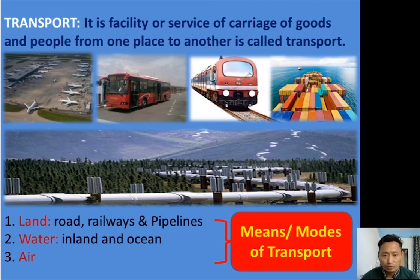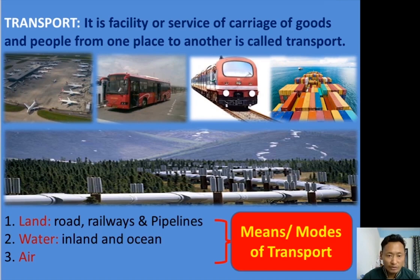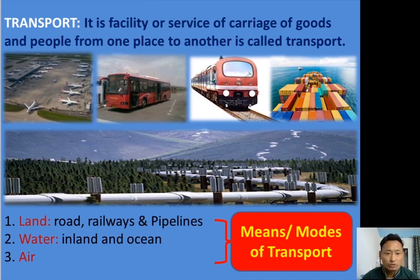Next we are going to learn about the means and modes of transport. The main theme of this chapter covers these one by one. First is land transport, which has three types: roadways, railways, and pipelines. Second is water transport, divided into inland waterways and ocean waterways. Lastly, we will learn about air transport.